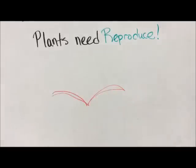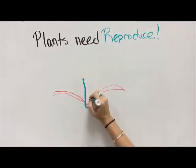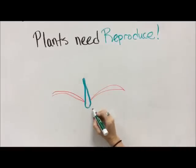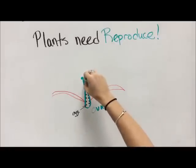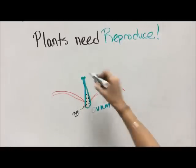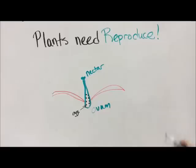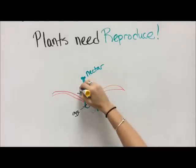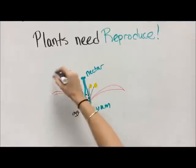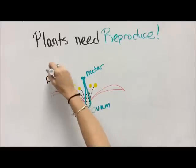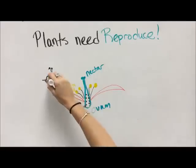The third thing that plants need to do is reproduce. Here are some petals on a flower, and this is the female part of the flower called the ovum. Inside the ovum there are eggs. Up at the top is where the nectar is found. Then there are little things called anthers that hold the pollen, and oftentimes those are below the nectar so that plants don't pollinate themselves.